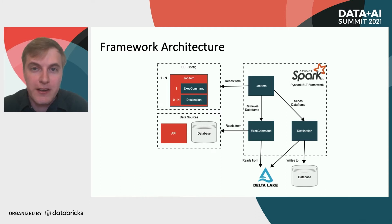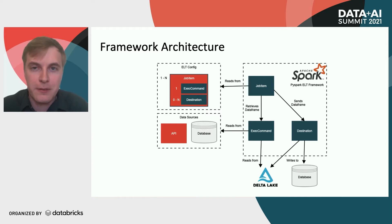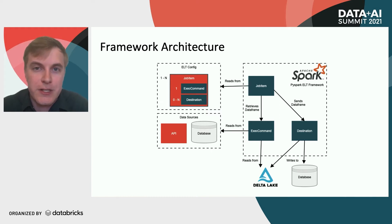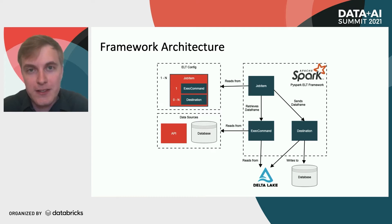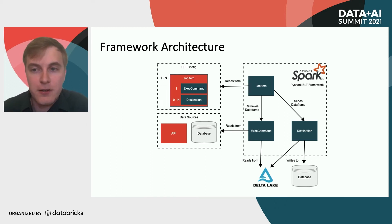Once we get that data back from a query or some other command, that data frame gets sent back to the job item. The job item then sends that data frame to a destination object. That destination interprets which format it should be and any other options that need to be applied, and it writes the data to the save location — whether that be a Delta table in our Delta Lake, a relational database, or something else. On that note, I'll send it over to Josh, and he'll walk through some of our configuration options.